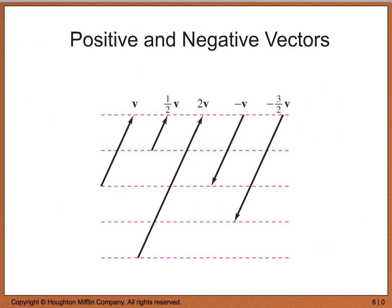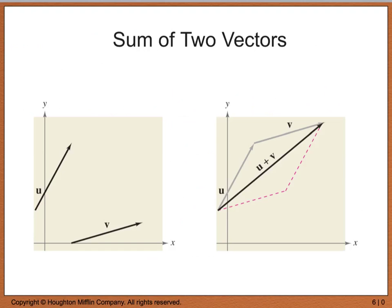The diagram shows vector V: multiplying by one half gives half the length in the same direction; multiplying by 2 gives twice the length in the same direction; multiplying by a negative flips the direction. Multiplying by negative three halves gives a vector 1.5 times as long but facing the opposite direction. When adding vectors U and V, we align the terminal point of U with the initial point of V, and the resultant is U plus V. Subtraction works similarly.